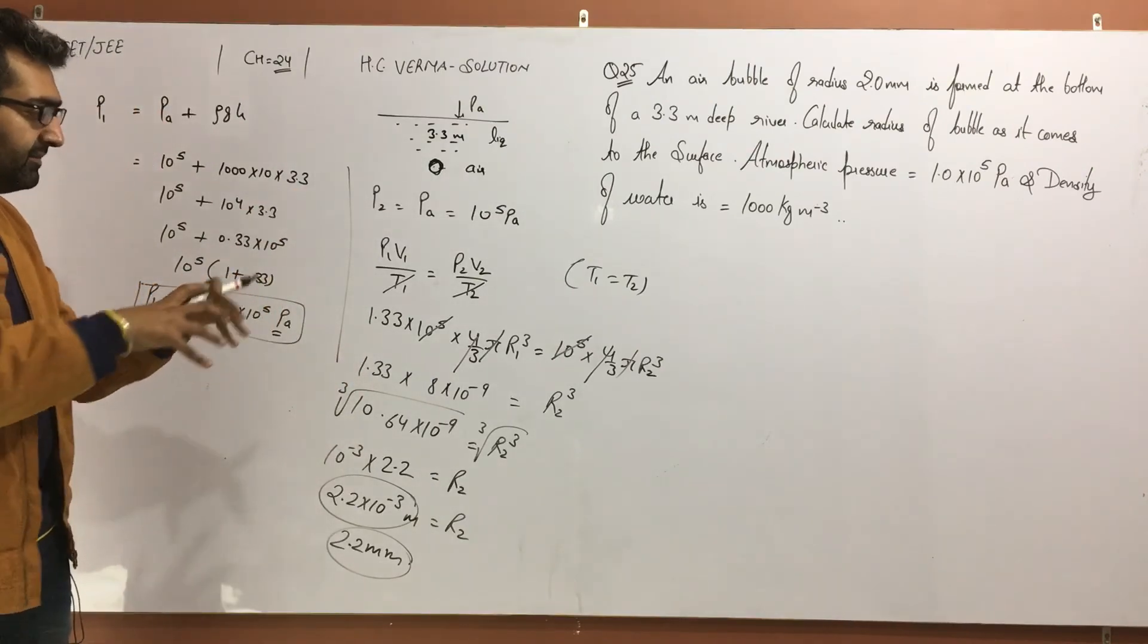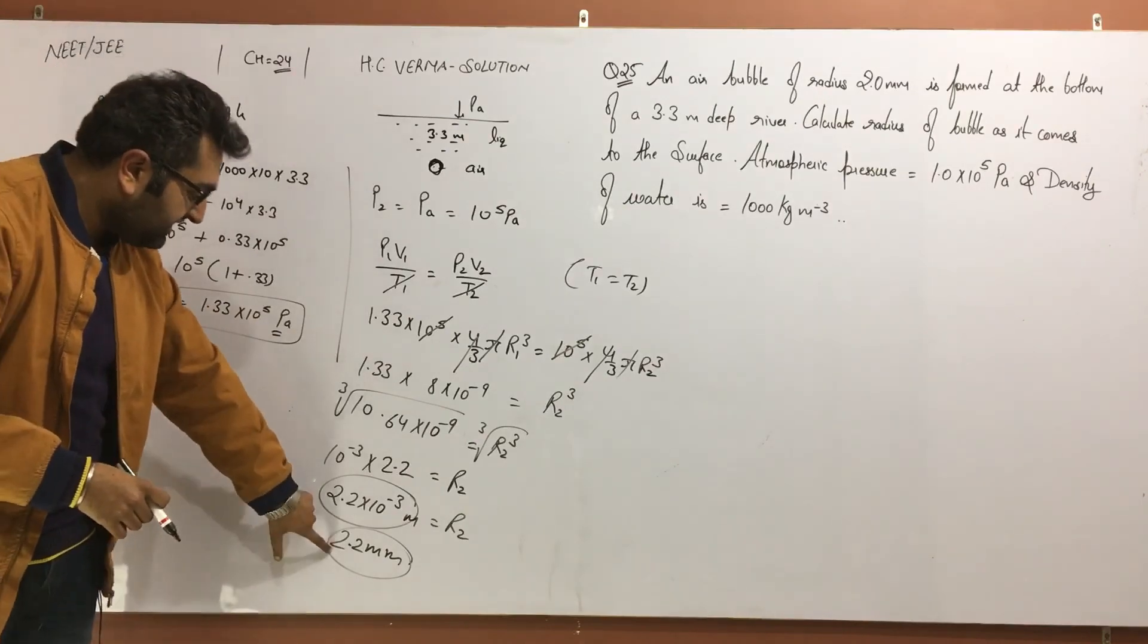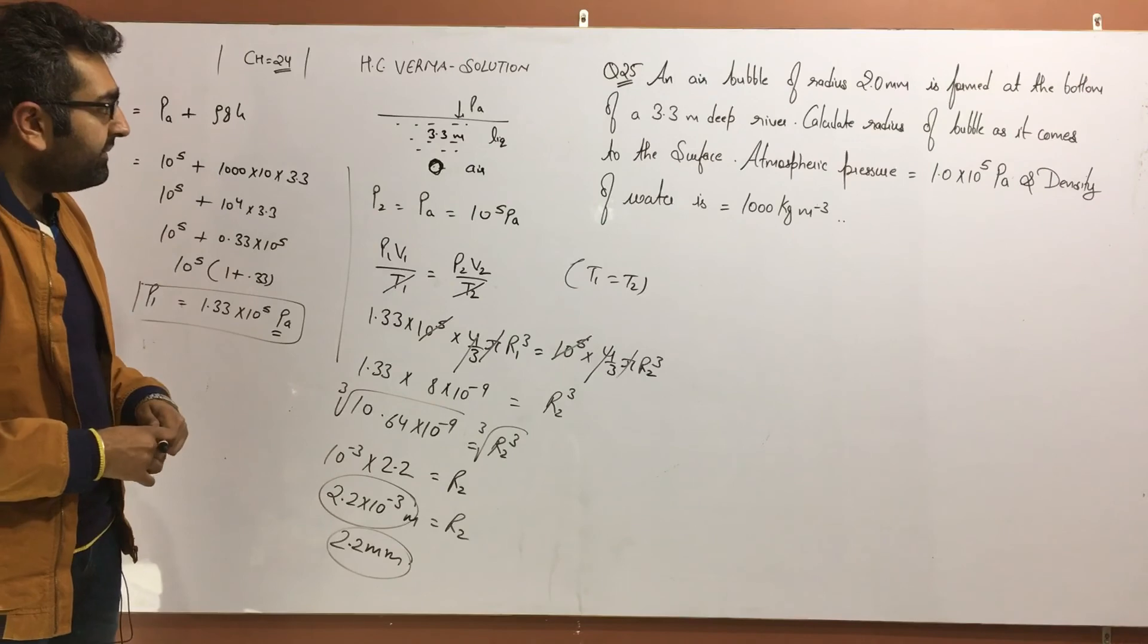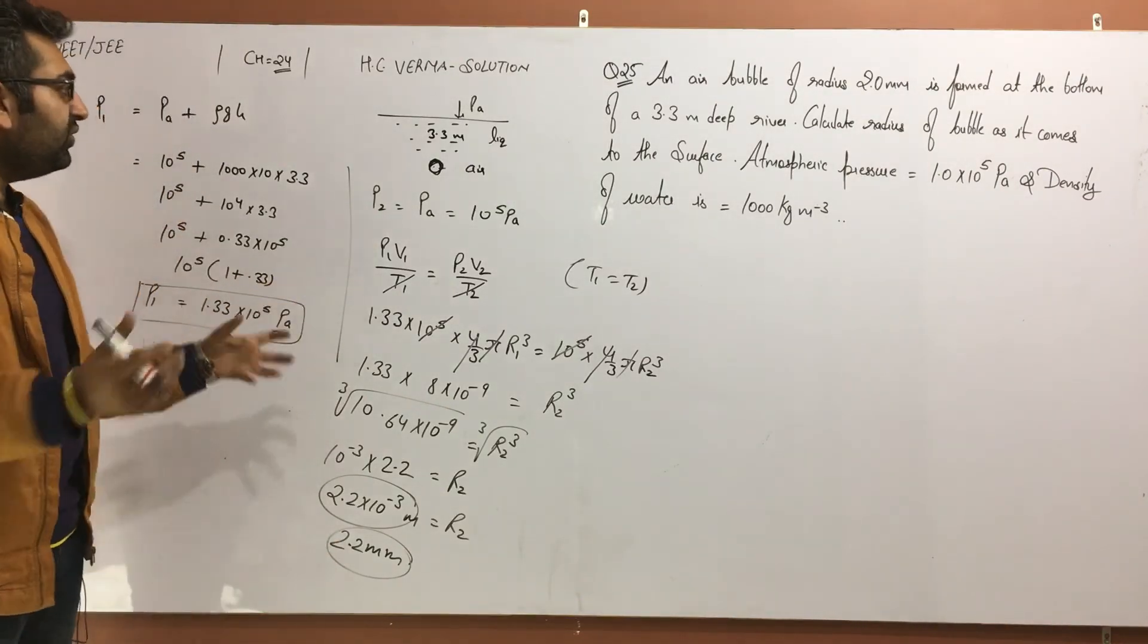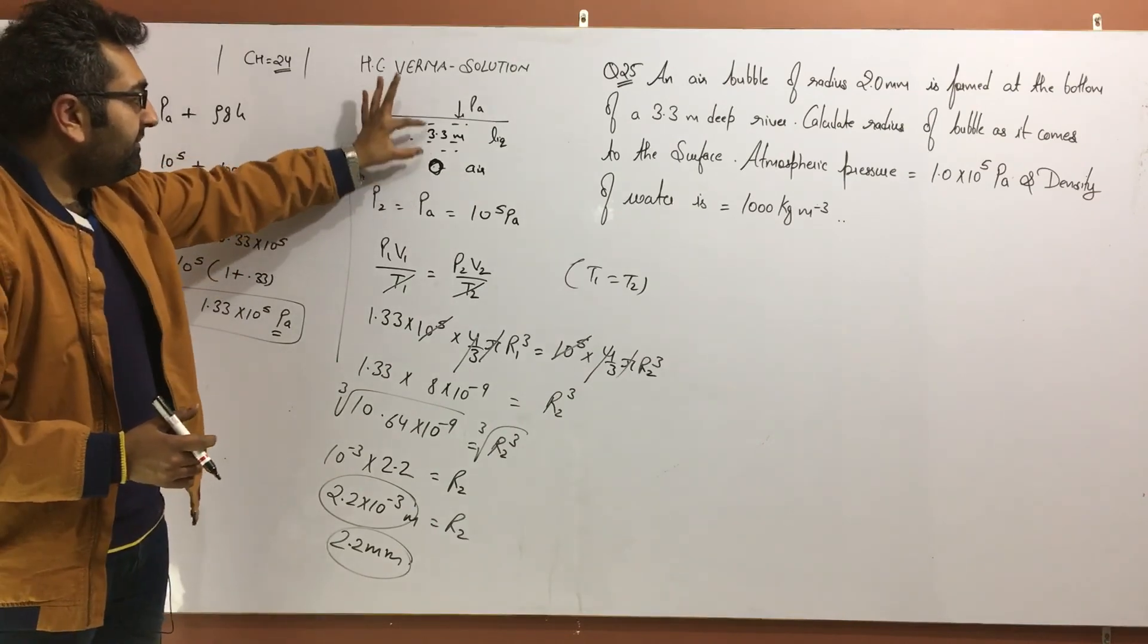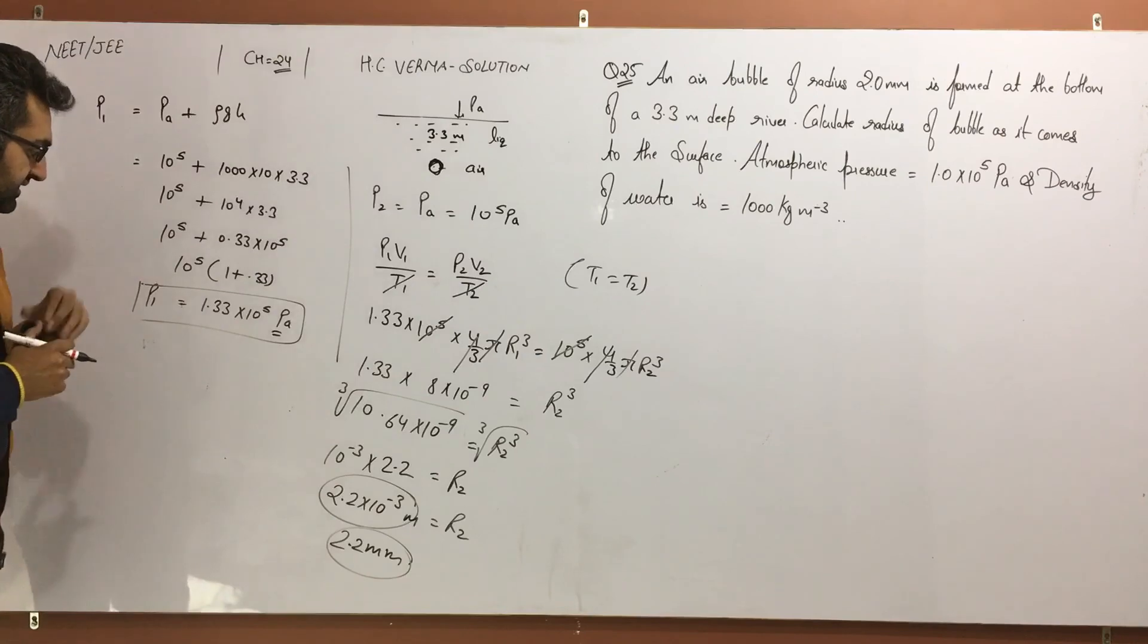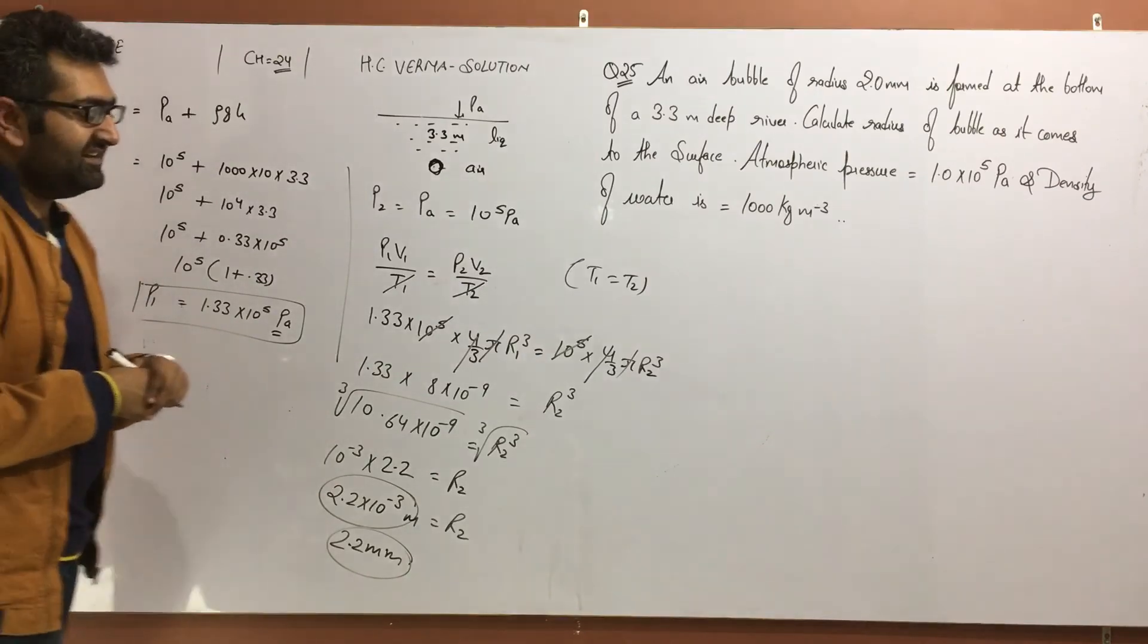Due to compression, volume decreased. After that, when the external pressure was removed, it expanded. It expanded by how much? 2.2 millimeter. Earlier it was 2 millimeter. So you can see, obviously it has increased. The bubble, coming out, became bigger. That is the situation. If you still have any doubt, you can ask, and please subscribe to the channel. Thank you.